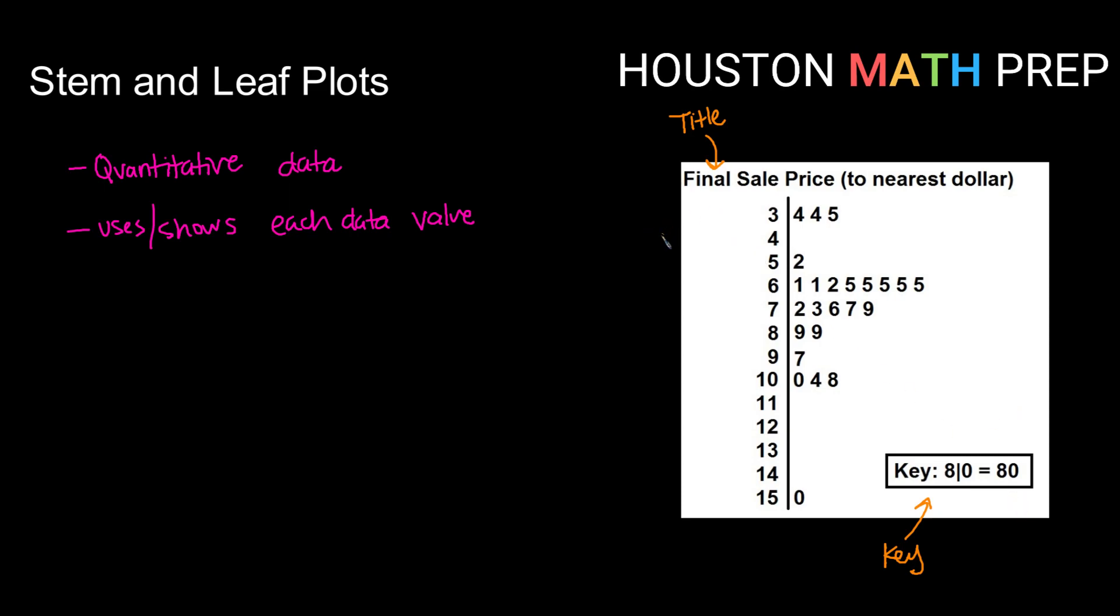So the idea here is that we have a vertical bar separating our numbers. This side is known as the stem and these are the leaves. So we put things into categories by showing this is the data value 34.